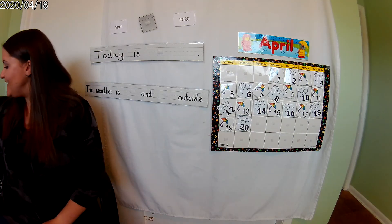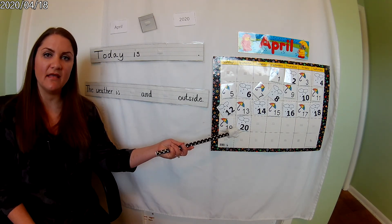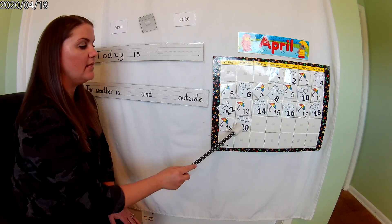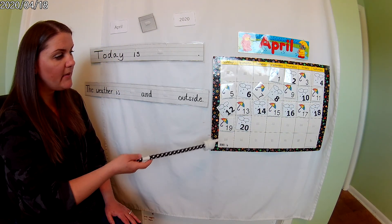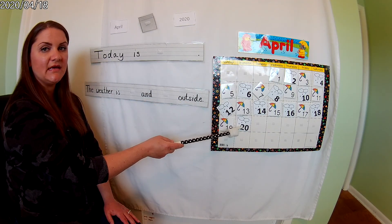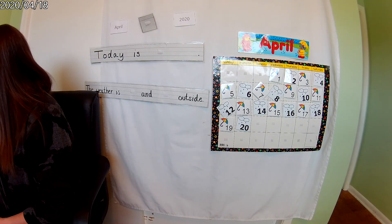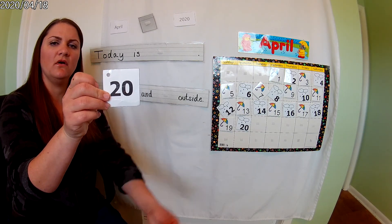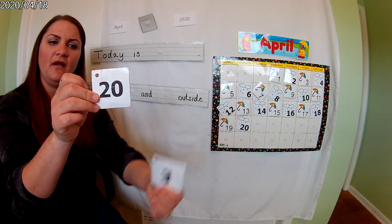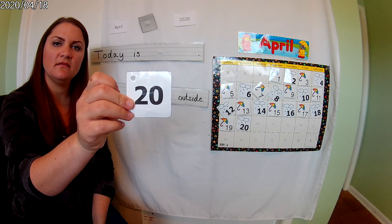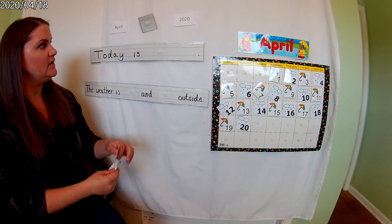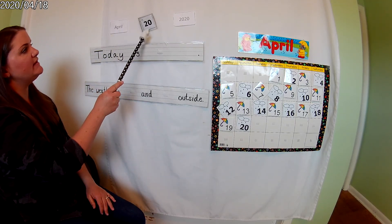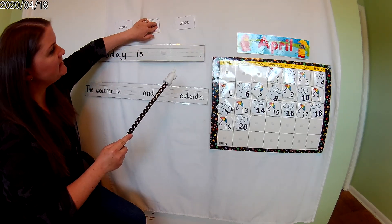You guys told me that today is April 20th. Nice job, because our pattern now is umbrella, clouds, umbrella, clouds, umbrella, clouds. So because we did our pattern, you told me that today is April 20th. Is it April 20th or April 3rd? That's right — today is April 20th. Let's read it together: April 20th, 2020.